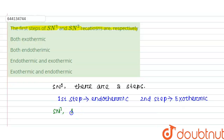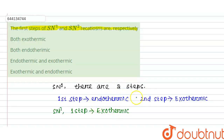In SN2, there is only one step, and that one step is exothermic. So in SN1 there are two steps — first endothermic, second exothermic — and in SN2 there is only one step, which is exothermic.